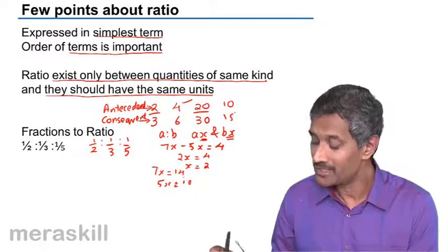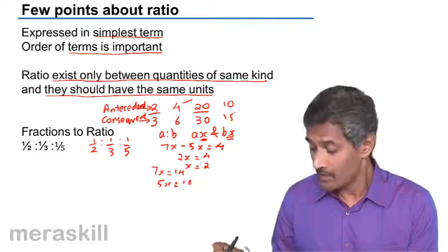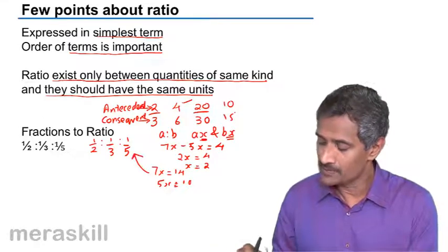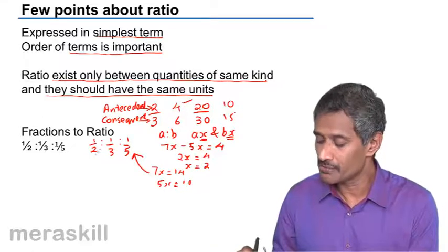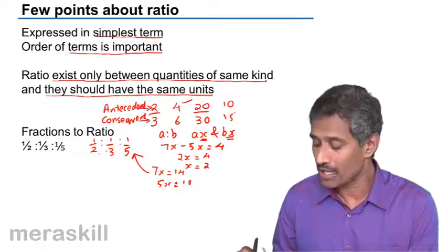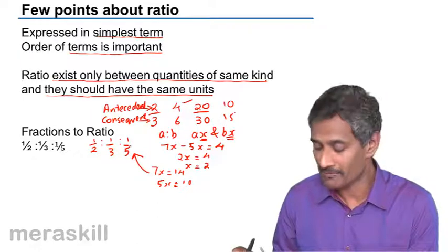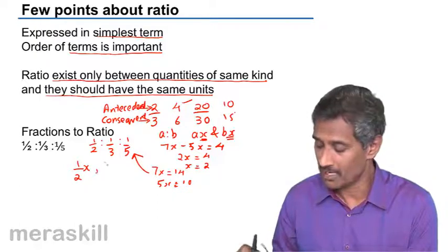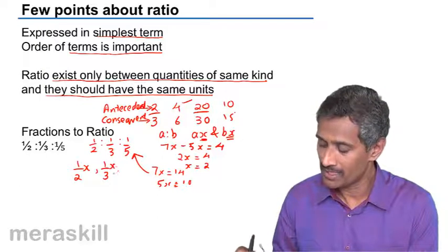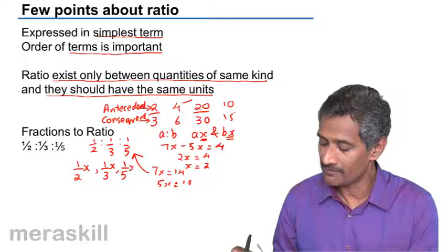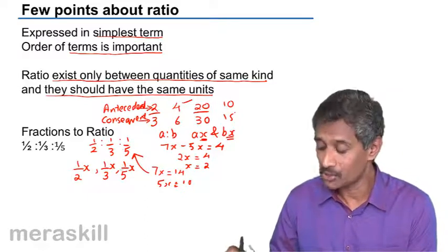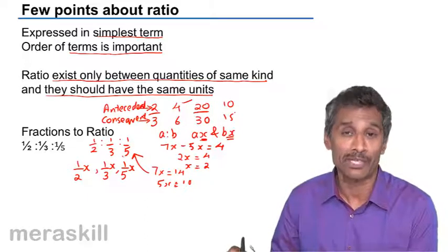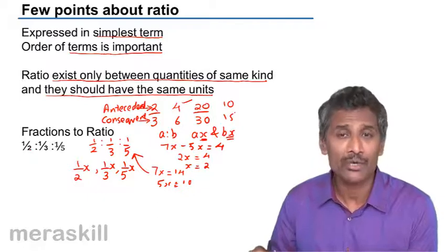So coming back to our examples, fractions to ratio. Suppose three quantities are in the ratio ½ is to ⅓ is to ⅕. We can take them as ½X, the quantities could be ½X, ⅓X, and ⅕X.